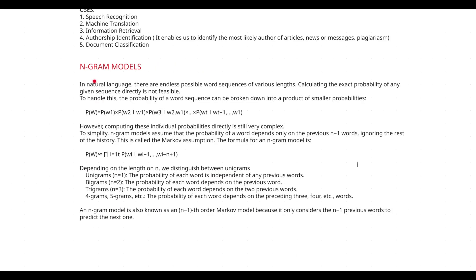Now let's see about n-gram models. In natural language there are endless possible word sequences of various lengths, so calculating the exact probability of any given sequence directly is not feasible. Rather than calculating the probability of each and every word occurring in a sentence — which is very complex — what they do is divide the given sentence into many word sequences.